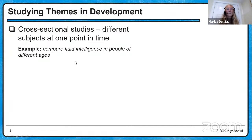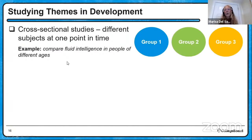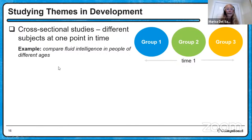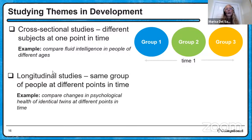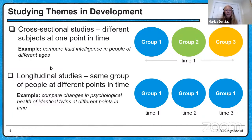Cross-sectional studies take different subjects and look at them at a single point in time — for example, comparing fluid intelligence of 10-year-olds, 25-year-olds, and 45-year-olds; you'd find fluid intelligence declines with age. Longitudinal studies take a look at the same exact group of people at different points in time — comparing, for example, the health of identical twins as they pass through their lives. With longitudinal studies you can see what remains the same and what changes.